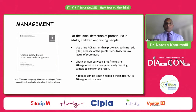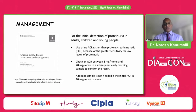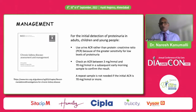NICE guidance recommends using urine ACR rather than protein-creatinine ratio because of greater sensitivity for low levels of proteinuria. Check ACR between 3 mg/mol and 70 mg/mol in a subsequent early morning sample — any sample is good for the first test, but once it comes back positive, you need an early morning sample. A repeat sample is not needed if the initial ACR was over 70 mg/mol. These are simple things you can implement in primary care anywhere in the world.